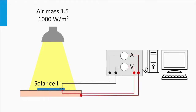Secondly, the setup has a voltage source which applies a varying voltage over the solar cell or solar panel. An ampere meter measures the current generated by the solar device at every voltage. Finally, a temperature-controlled substrate guarantees that the solar cell is at the required standard temperature of 25 degrees Celsius.